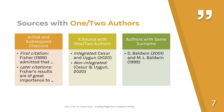If you have authors with the same surname, even if the years are the same, use the initials. For example, if two different authors both have the surname Baldwin, you need to use the initials of their first names to distinguish between them.